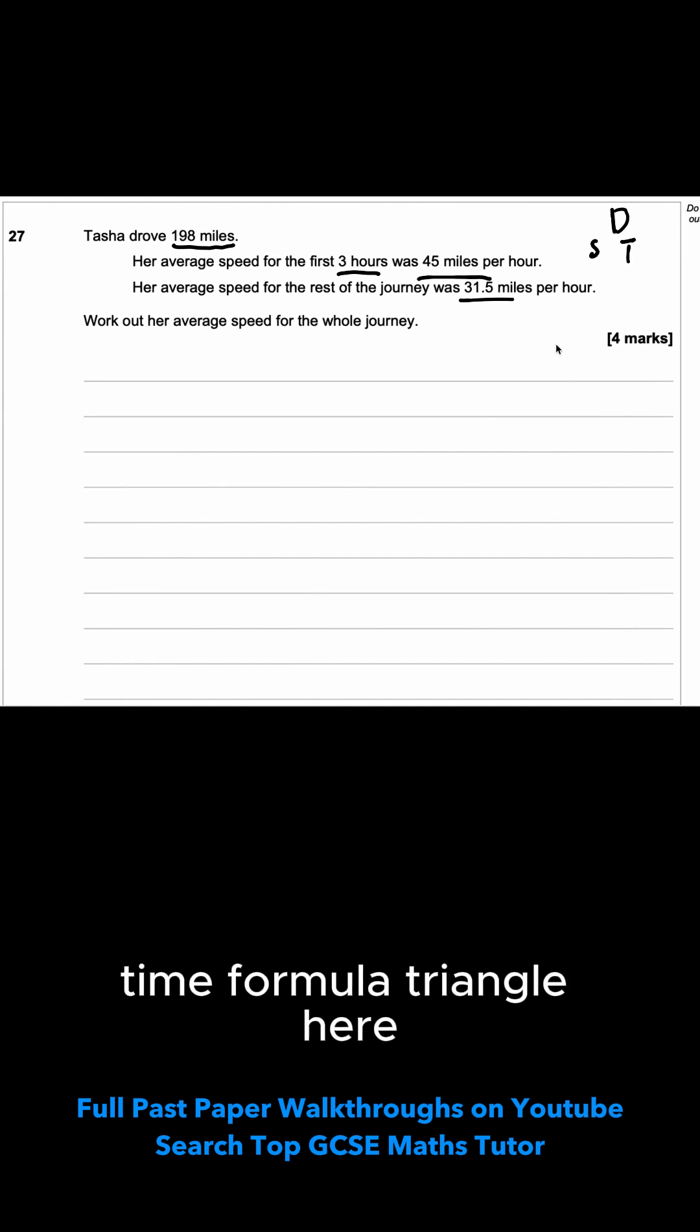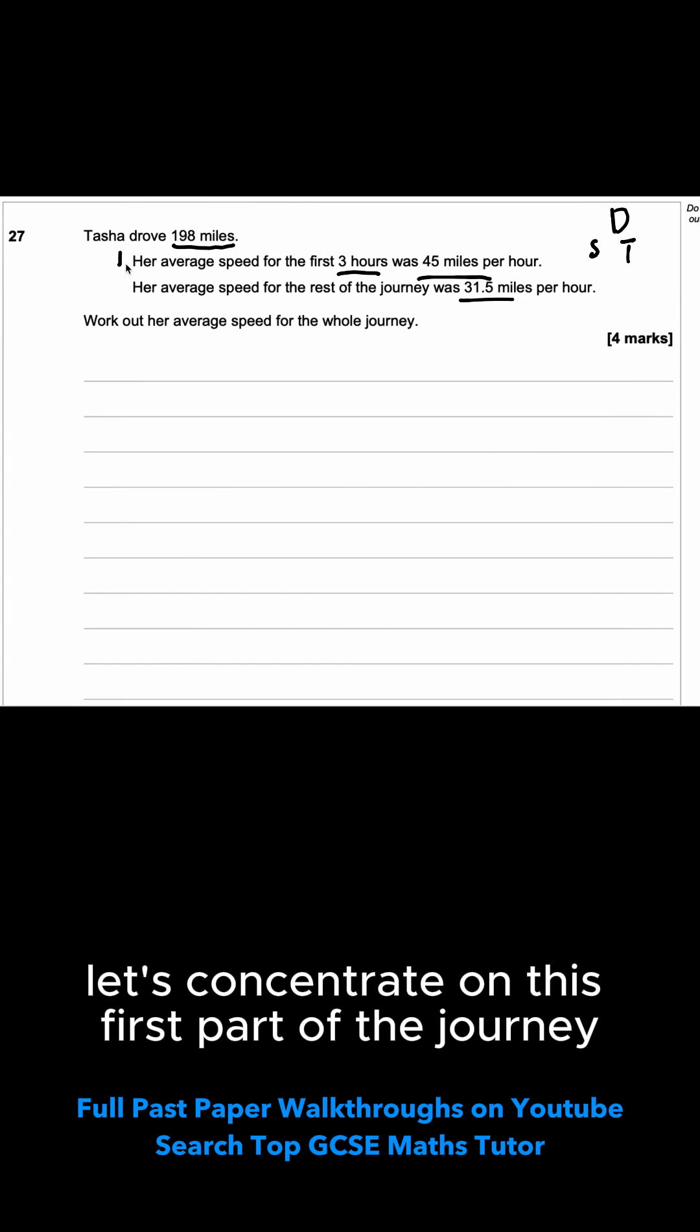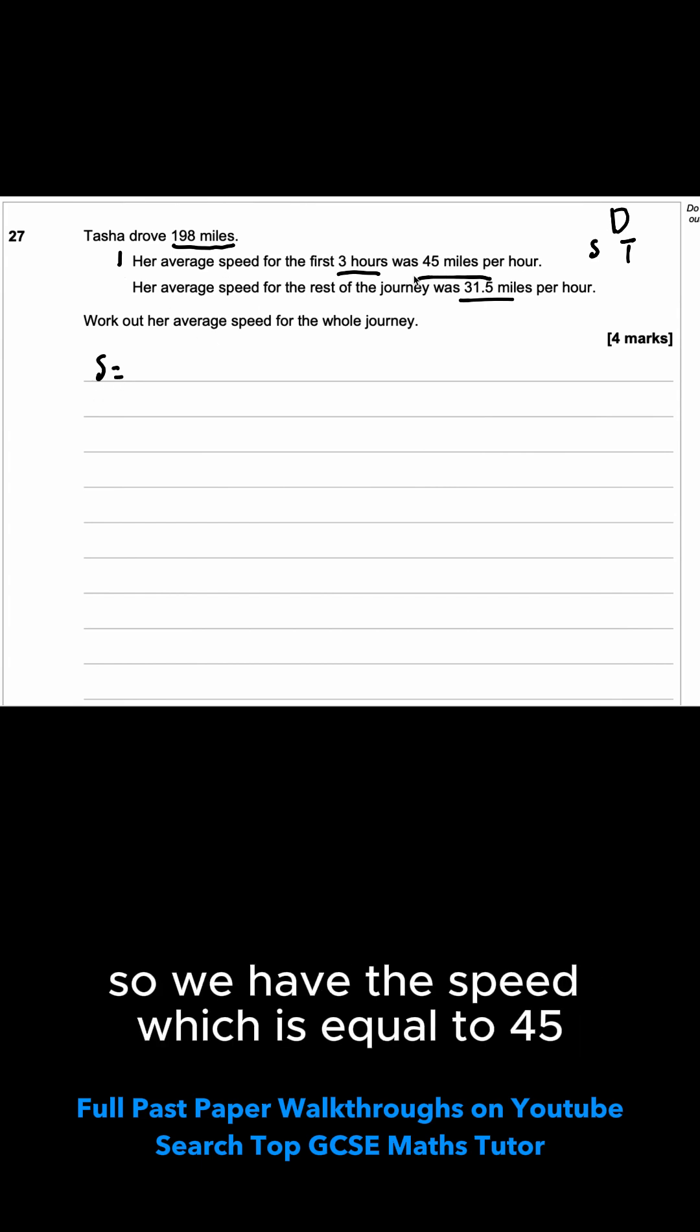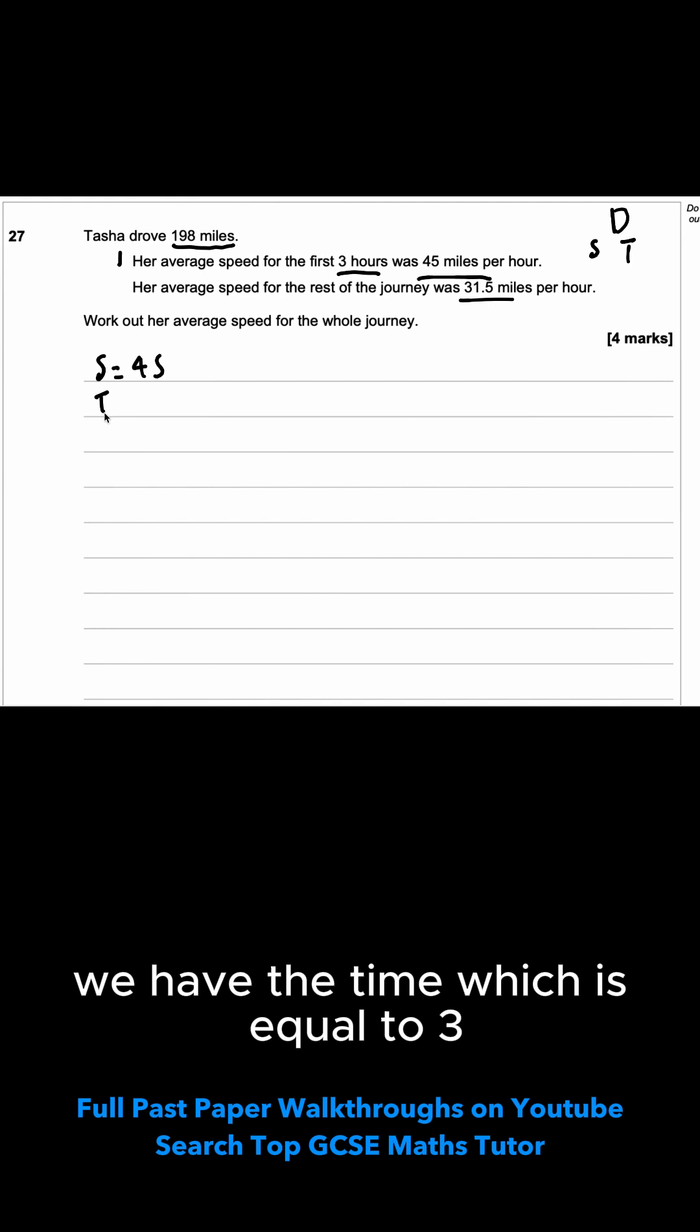We're going to be using our distance, speed, time formula triangle here. Let's concentrate on this first part of the journey. So we have the speed which is equal to 45. We have the time which is equal to 3.